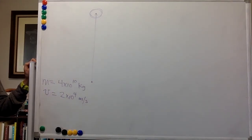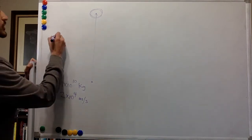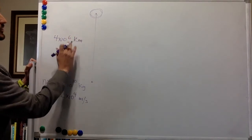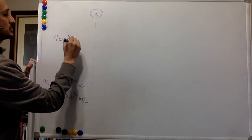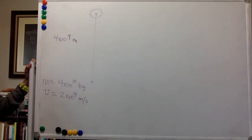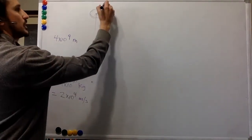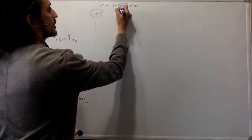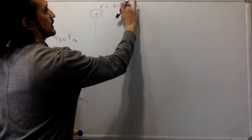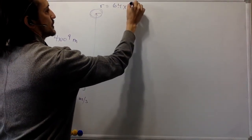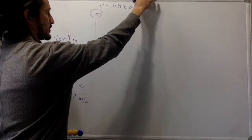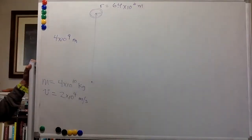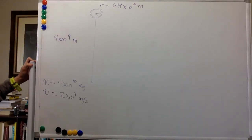The asteroid is 4 times 10 to the 6 kilometers away, which is 4 times 10 to the 9 meters. The radius of the earth is 6,400 kilometers, so that's 6.4 times 10 to the 6 meters. It's good to have all your distances in the same units.